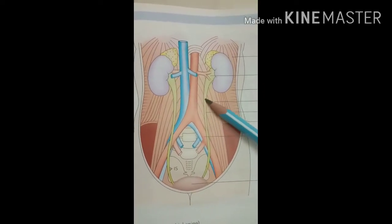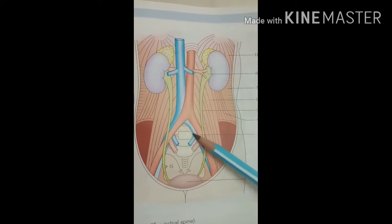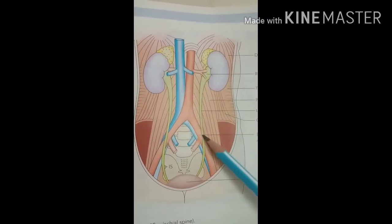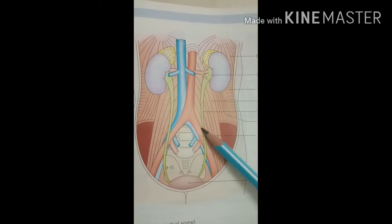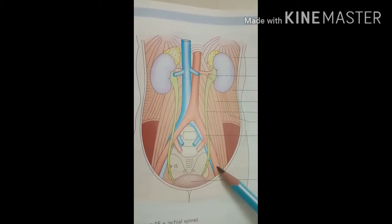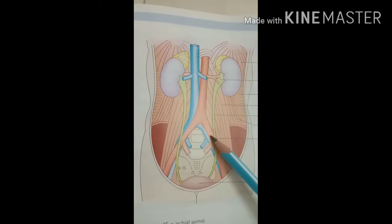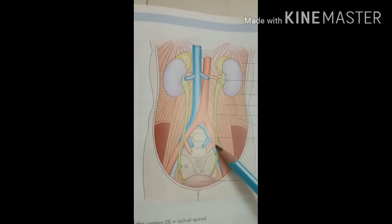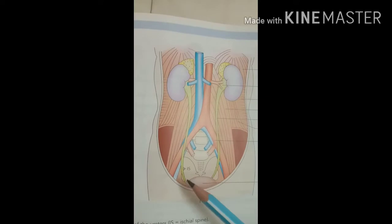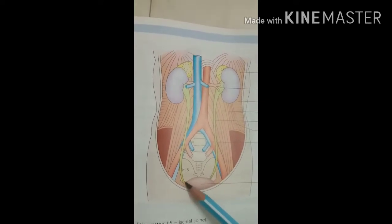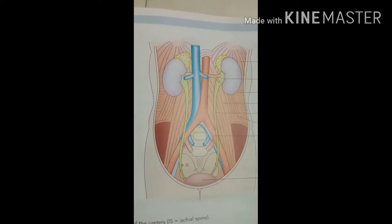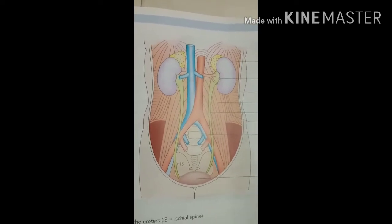The ureter continues downward and, at the bifurcation of the common iliac artery, it crosses over. The common iliac artery divides into the internal iliac artery and the external iliac artery. At this bifurcation point, the ureter crosses and enters the pelvis. It then goes downward and enters the urinary bladder at its upper and posterior surface.